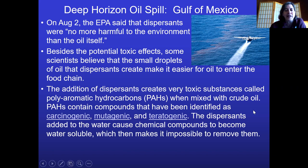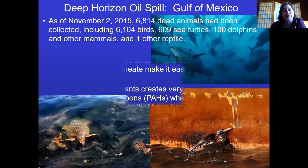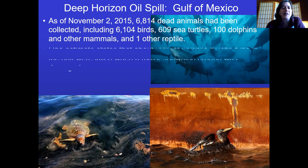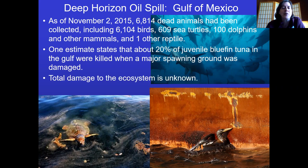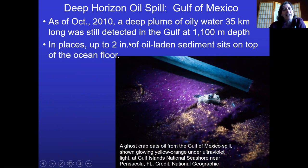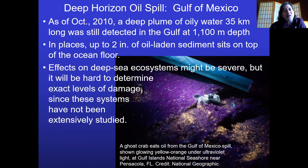The dispersant is carcinogenic, mutagenic, and teratogenic — nasty stuff that probably shouldn't have been used. The total damage count goes on: when scientists go to the ocean floor today, they find a thick coat of residue, a deep plume of oily water, and two inches of oily sediment on the ocean floor. The long-term effects on deep sea ecosystems are still largely unknown — it's very hard to study the deep ocean.